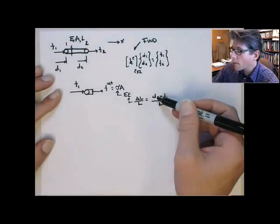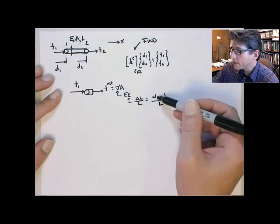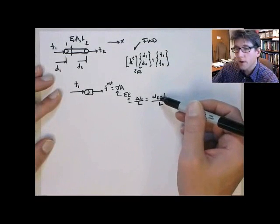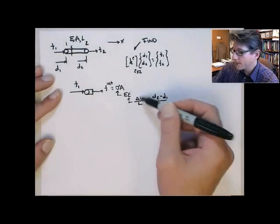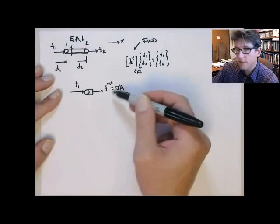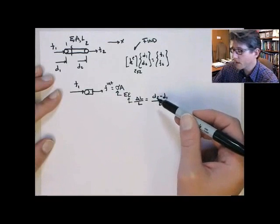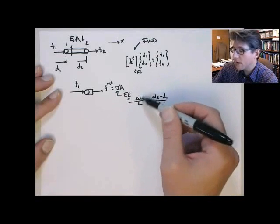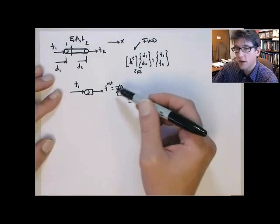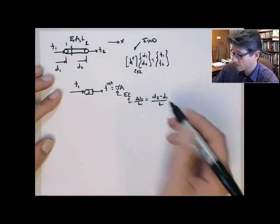Note if d2 is greater than d1, the bar is elongating. So delta L is positive, the strain is positive, and the stress is positive. If d1 is greater than d2, then the bar is compressing. Delta L will be negative, giving you a negative strain and a negative compressional stress.